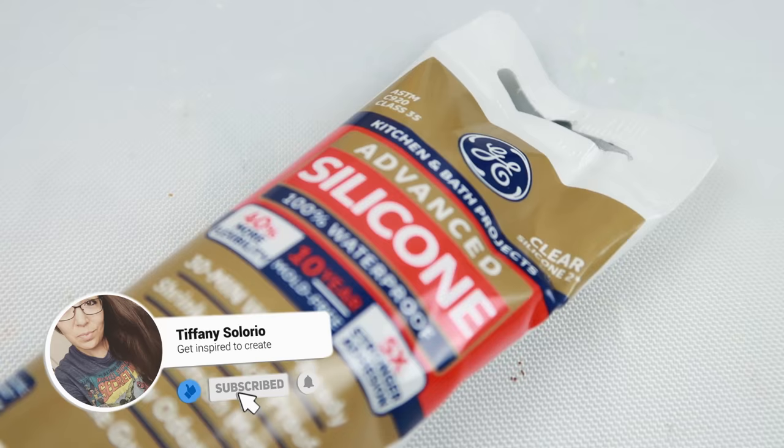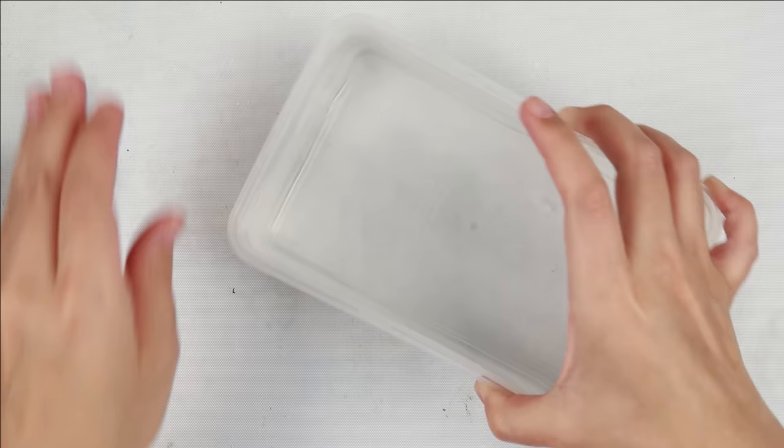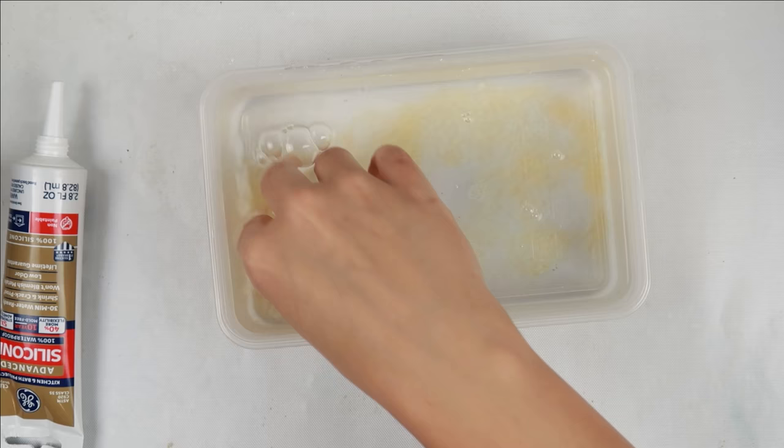This process is so simple. The product that you need is 100% clear silicone caulking for bathrooms and kitchens. You are going to need a bowl with warm water and some dish soap.